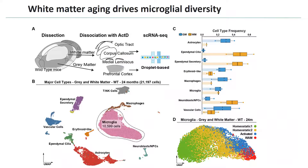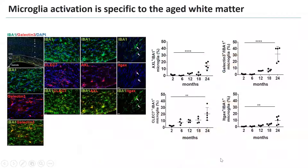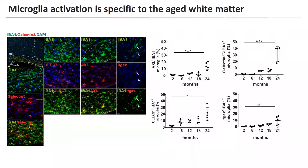Since the Smart-seq pipeline was based on limited cell numbers, we also performed 10x sequencing with tens of thousands of cells and reproduced the four clusters, including the white matter-associated microglia specific to white matter. Using markers including AXL, Galectin-3, CLEC7A, and ITGAX, we confirmed consistent with our single-cell data that WAMs appear around 18 months and are associated with white matter areas like the corpus callosum and basal ganglia, always near white matter tracts.